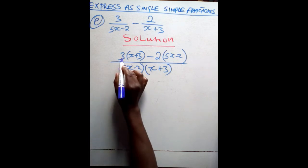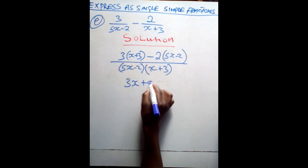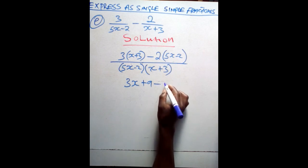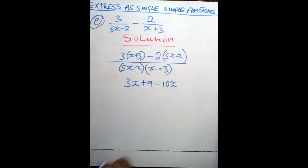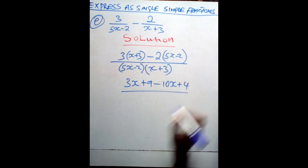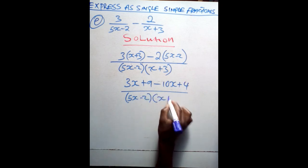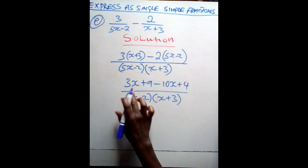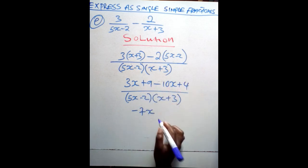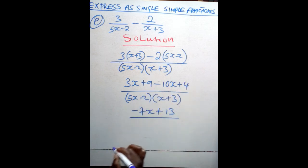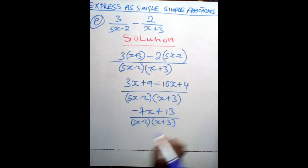After that, open the brackets. 3 times x gives you 3x. 3 times 3 gives you 9. Negative 2 times 5x gives you negative 10x. Negative 2 times negative 2 gives you positive 4. Over — you maintain the same denominator: (5x minus 2)(x plus 3). Then 3x minus 10x gives you negative 7x. 9 plus 4 gives you 13. Over the same (5x minus 2)(x plus 3).